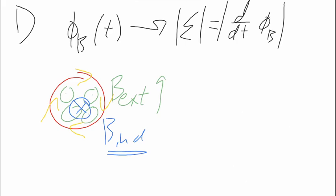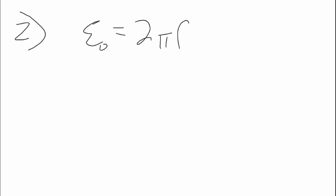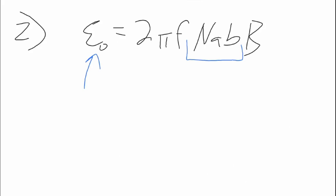Problem number two is an application problem where they give you an equation for the EMF — they've already done the derivative of the flux. They ask you to do a little calculation where you equate coefficients, so epsilon-naught equals 2π f times NAB times big B. You're solving for NAB as a single variable, so you just plug in epsilon-naught, the frequency, and the magnetic field, and isolate that whole term.